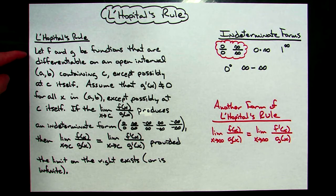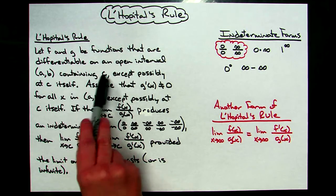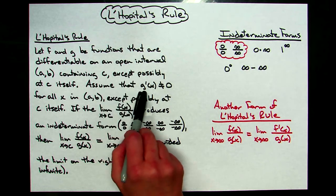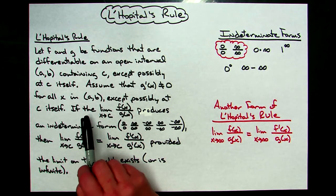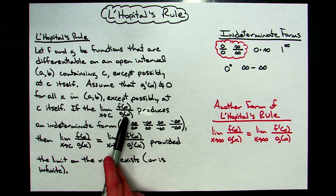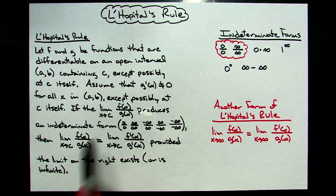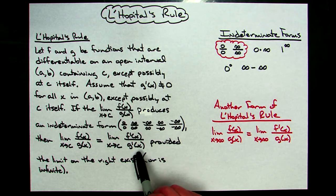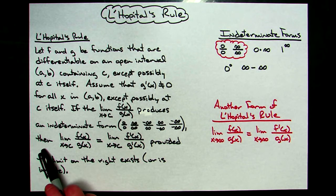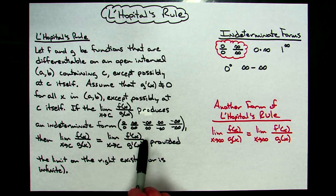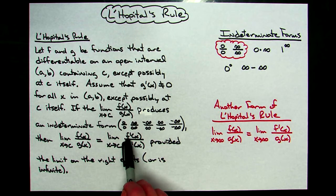I have a formal definition for L'Hôpital's Rule. We're going to let f and g be continuous functions that are differentiable on the open interval from a to b, containing c, except possibly at c itself. We assume that g prime of x does not equal 0 for all x in that open interval from a to b, except possibly at c itself. If the limit as x approaches c of f(x) over g(x) produces an indeterminate form — 0 over 0, infinity over infinity, negative infinity over infinity, or negative infinity over negative infinity — then the limit equals the limit as x approaches c of f prime of x over g prime of x, provided that limit on the right exists or is infinite.